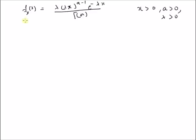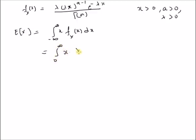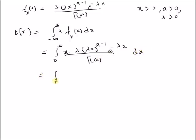Our first goal is to find the mean value of this random variable x. The expectation of x is defined by the integral from −∞ to +∞ of x · f_X(x) dx, which becomes the integral from 0 to ∞ of x times λ · (λx)^(a−1) · e^(−λx) / Γ(a) dx. This simplifies to the integral from 0 to ∞ of λ · (λx)^(a+1−1) · e^(−λx) / Γ(a) dx.